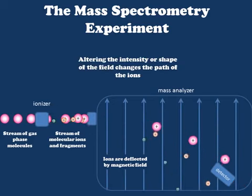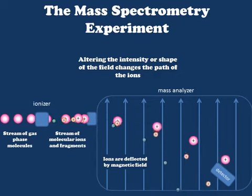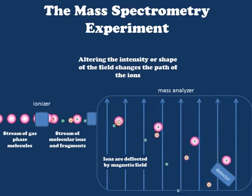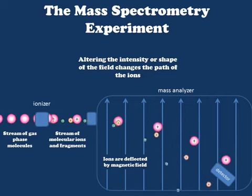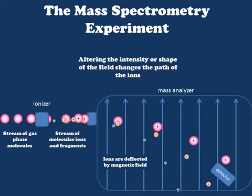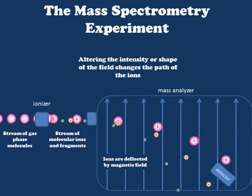Now let's take a look at the effect of altering the intensity or the shape of this magnetic field. If I increase the strength of the field, I increase the force acting on the ions, meaning that their path curves to a greater extent. We've increased the field strength to the extent that the intermediate-sized ions no longer reach the detector, but the curvature of the molecular ions is not sufficiently steep, and so nothing is striking the detector at this moment — meaning at this particular field setting, the detector will be silent and no current is generated.